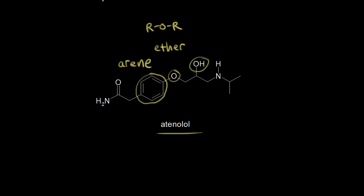Next, we have an OH and then the rest of the molecule — R-O-H — so that's an alcohol. And then we have a nitrogen with a lone pair of electrons, with an R group on one side and an R group on the other side. This is an amine.